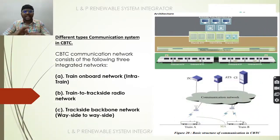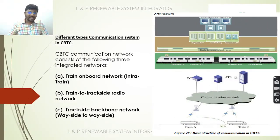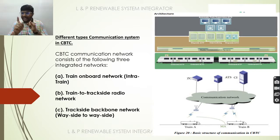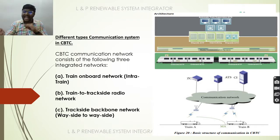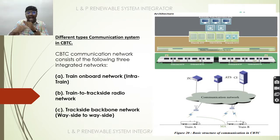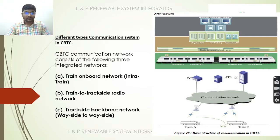There are different types of communication systems available in CBTC: an intra-train communication system (train on-board network), a train-to-track radio network, and a trackside backbone network (wayside-to-wayside network).